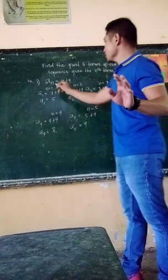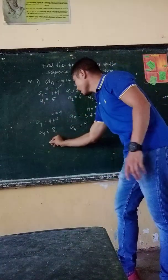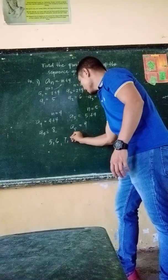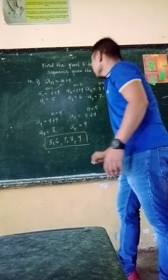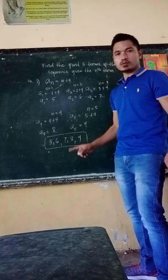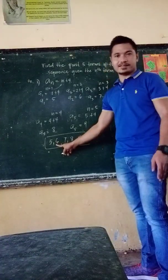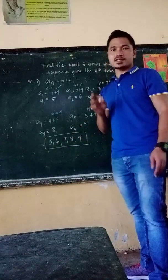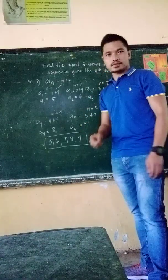In other words, the first 5 terms of the given nth term are 5, 6, 7, 8, 9. As you can see, it is an arithmetic sequence because there is a common difference — a constant number of 1. So that's how you find the first n terms of a given nth term.